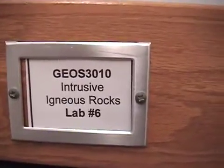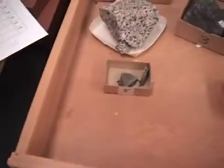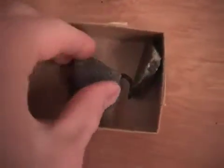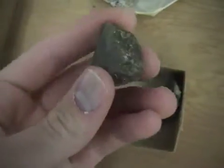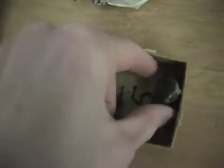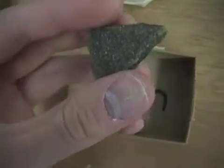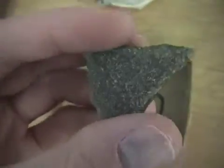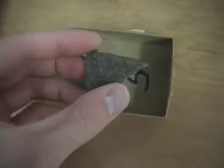We're looking at intrusive igneous rocks. Here we have dunite — it's got a kind of yellow-green sheen to it.